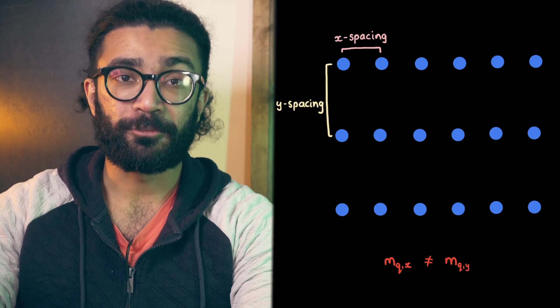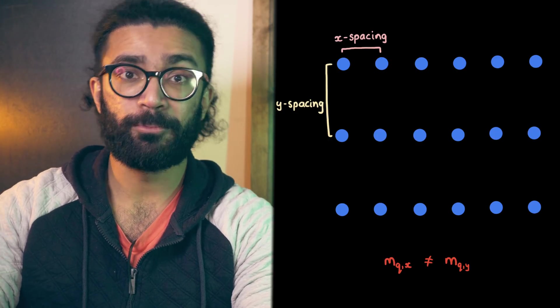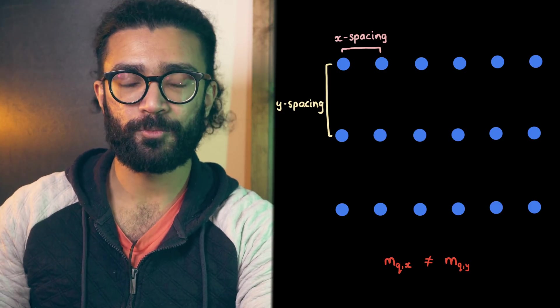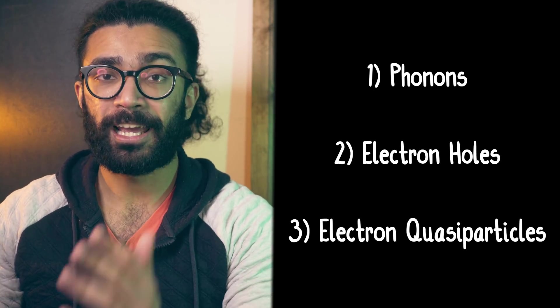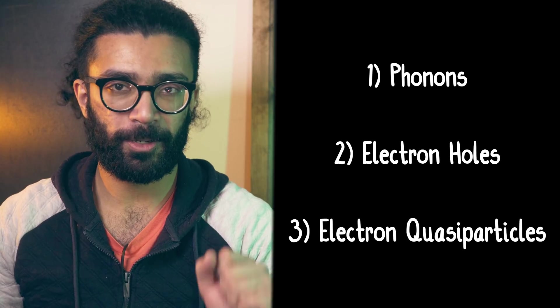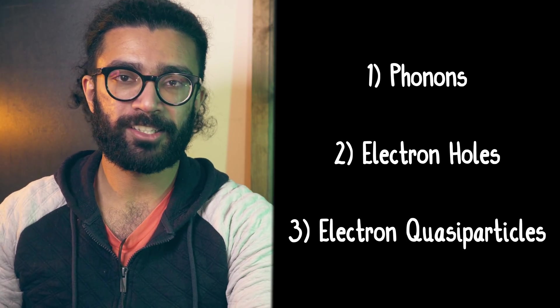So, we've looked at three examples of quasiparticles that emerge from much more complex systems. We've looked at phonons, electron holes, and electron quasiparticles. I'll leave a link in the description below if you want to find out more about each one of these, as well as learn more about quasiparticles such as plasmons, magnons, and more.